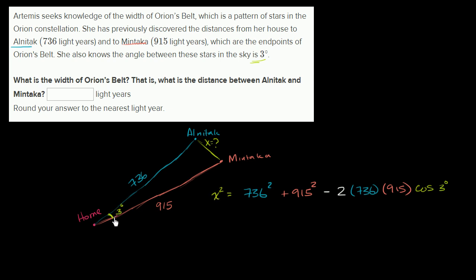If we know the angle and we know the two sides on either side of the angle, we can figure out the length of the side opposite by the law of cosines. It essentially starts off not too different than the Pythagorean theorem, but then we give an adjustment because this is not an actual right triangle. So we have 736 squared plus 915 squared minus 2 times the product of these sides times the cosine of this angle.